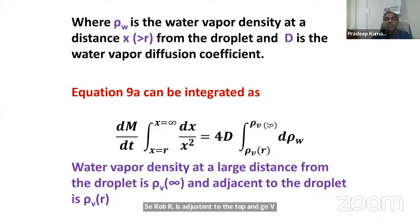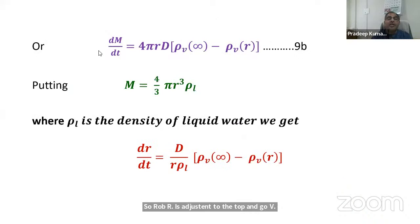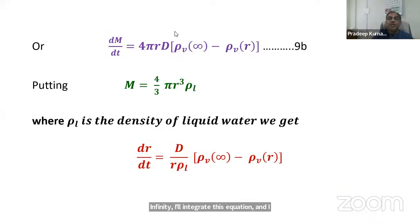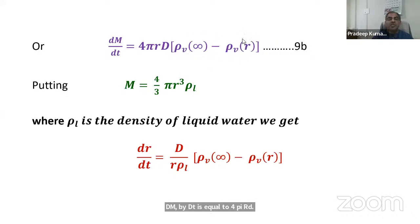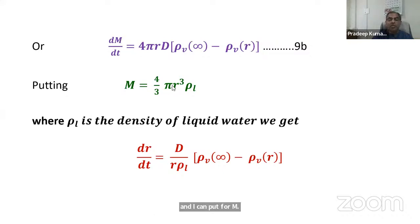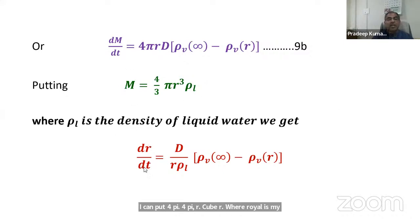Substituting m = (4/3)πr³ρ_L, where ρ_L is the density of liquid water, we get dr/dt = D/(r × ρ_L) × (ρ_v∞ − ρ_vr). Using the ideal gas law, this can be rewritten in terms of vapor pressure, where e_∞ is the water vapor pressure of the ambient air far from the droplet, and e_r is the vapor pressure adjacent to the droplet, approximately equal to the saturation vapor pressure e_s from the Clausius-Clapeyron equation.